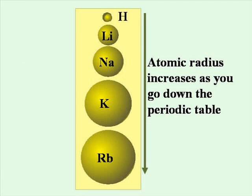The atomic radius increases as you go down the periodic table because electrons are being added in energy levels that are further from the nucleus. Those inner electrons shield the outer electrons and allow them to move even further away from the nucleus, increasing the radius of the atom.